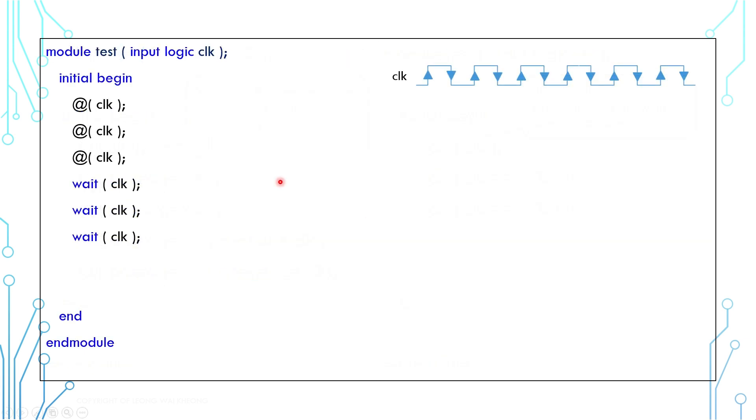Let's look at this example to understand the difference between @ and wait. There are three @ and three wait statements. The first @ waits for the clock to change, and it happens here. Similarly, the second @ will wait until here, and the third @ will wait until here.